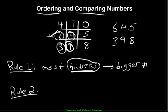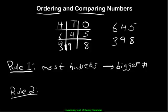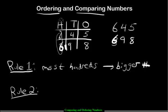Memorize that. Now there are going to be cases where the hundreds are the same number. Let's change this number to 698. Rule number one states that the number with the most hundreds is the bigger number, but the hundreds are the same — they're tied. So what do we do? We jump to the tens. The rule states that the number with the most tens is the bigger number, and in this case this one wins.